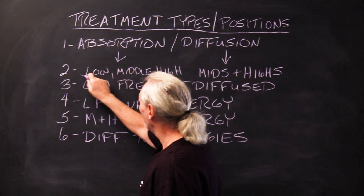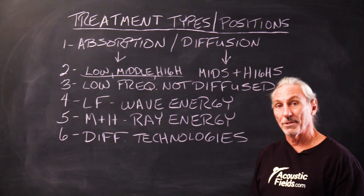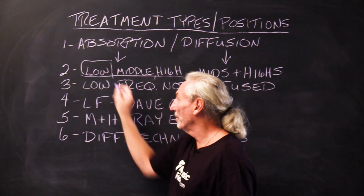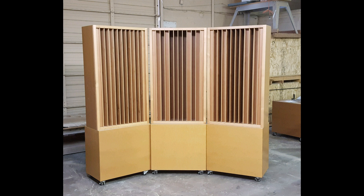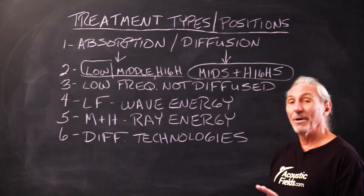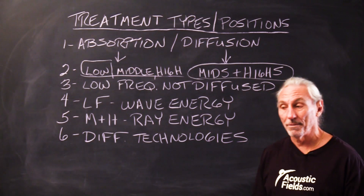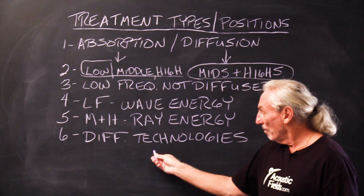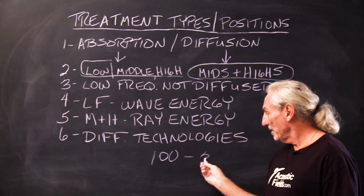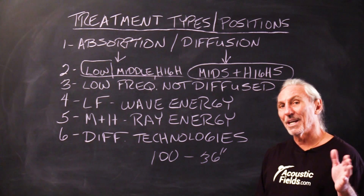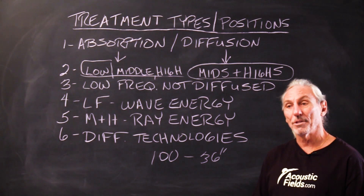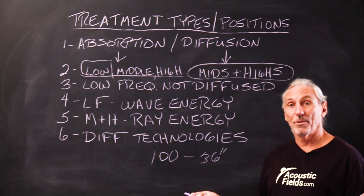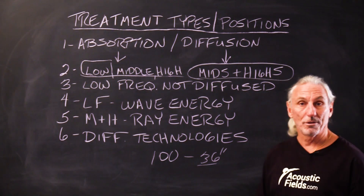Absorption deals with low, middle, and high frequencies — it covers all the frequencies. Obviously the low frequencies are the most difficult to absorb, and that's our carbon technology, our diaphragmatic technology. Diffusion really is a technology for mids and highs. Can low frequency energy be diffused? Yes, but the distances involved with the diffuser that you would have to build are significant. If you're going to diffuse energy that's 100-cycle energy, your diffuser is going to be at least 36 inches deep.